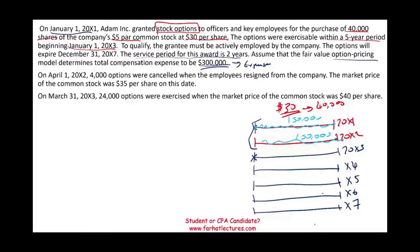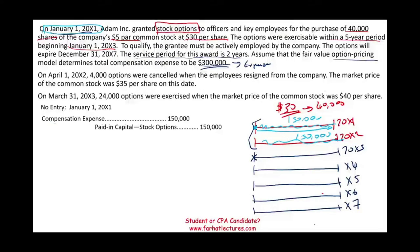On the grant date, January 1st, there is no journal entry — because if the employees all left before the service period ends, there would be no expense. After one year, we record $150,000: debit Compensation Expense $150,000, credit Paid-in Capital — Stock Options $150,000. Compensation expense increases, equity decreases, but APIC-Stock Options increases — so there is no net effect on the balance sheet overall, though the income statement is hit with $150,000.